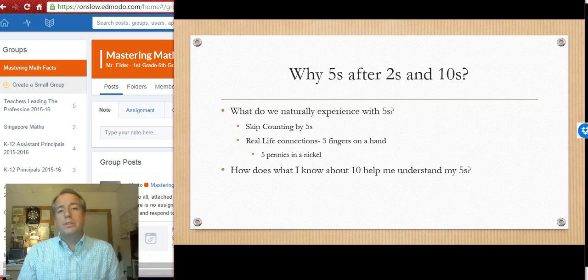We have some natural experiences we would understand with fives. In the same way that kids have a lot of background with times ten, they're going to have a lot of that similar background with times five, when you think about five fingers on a hand, hopefully not five hands on a finger, but five fingers on a hand, five toes on a foot, all this counting even from kindergarten on up. There's just a lot of experiences that kids have with fives that follows after the twos and tens.